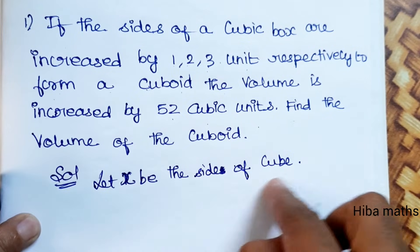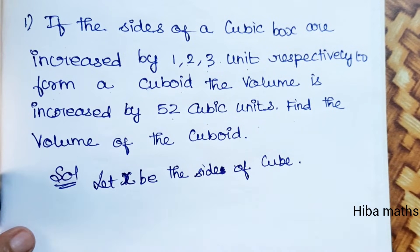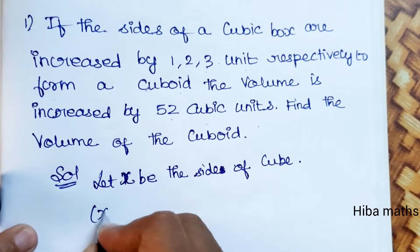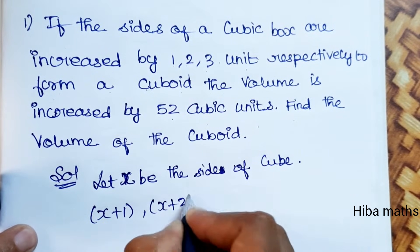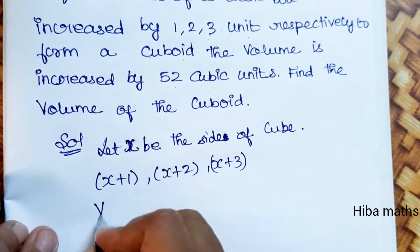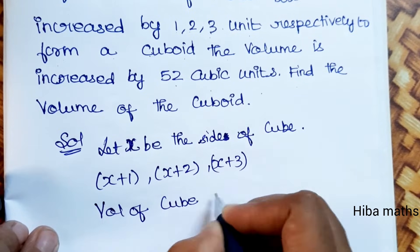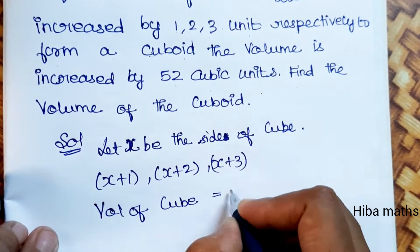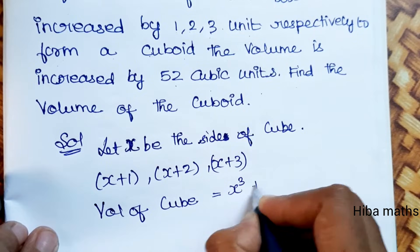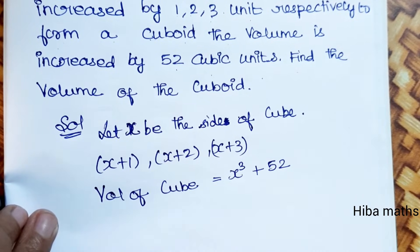Let x be the side of cube. So one side is increased by 1, 2, 3, so I need x plus 1, x plus 2, x plus 3, and volume of cube, volume of cube is increased by 52.